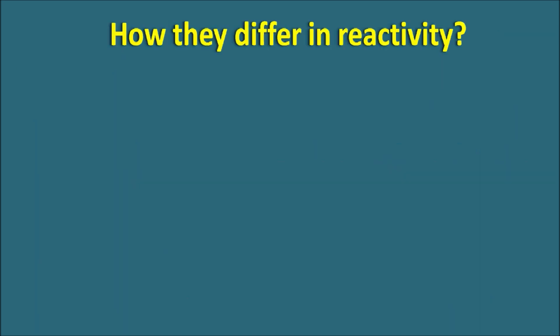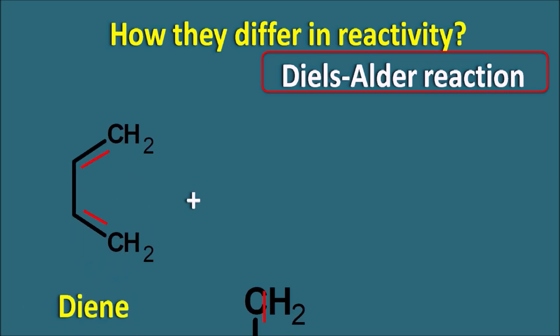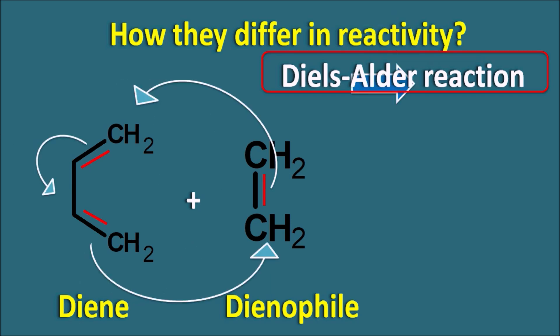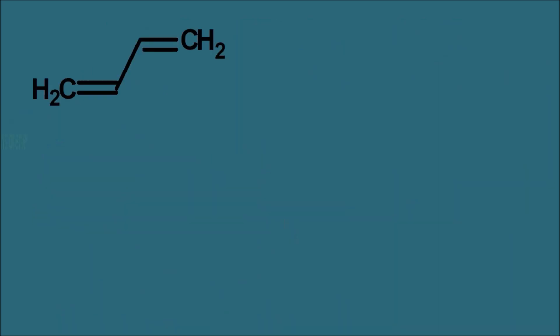How are they going to differ in reactivity? These dienes mainly differ in their chemical reactivity, particularly towards the Diels-Alder reaction. In the Diels-Alder reaction, a diene reacts with a dienophile and undergoes a cycloaddition reaction to form a cycloaddition product. Simply, cyclohexane is formed from 1,3-butadiene and ethene. The rate of reactivity depends on the diene, and this Diels-Alder reaction is a syn-addition reaction, meaning the groups are attached on the same side of the pi bond. Therefore, it shows different rates of reactivity with respect to cis and trans configuration.